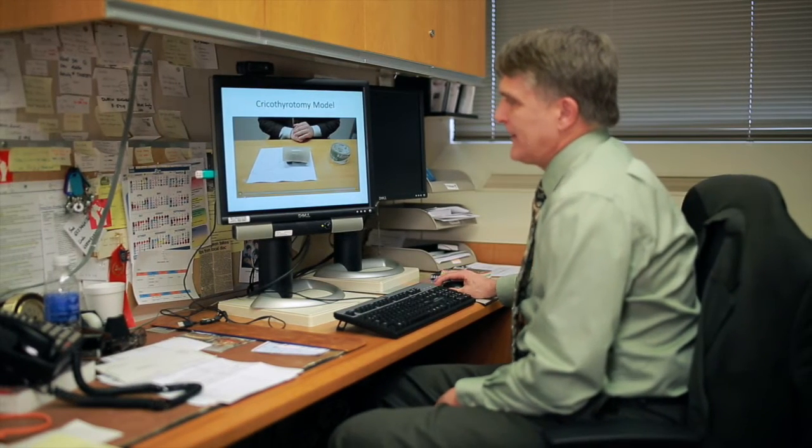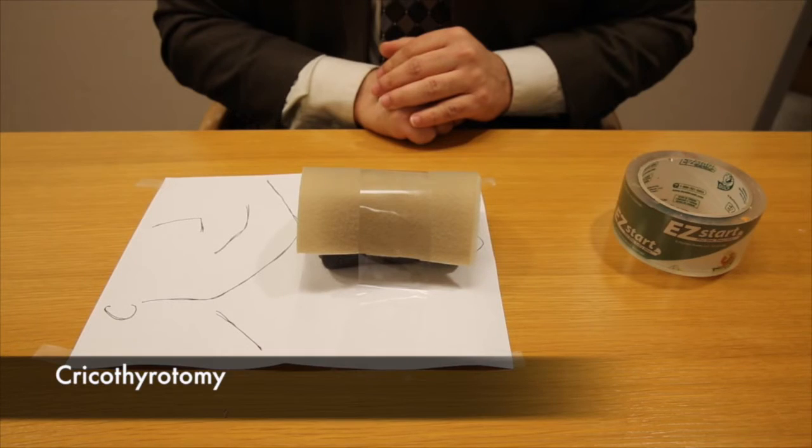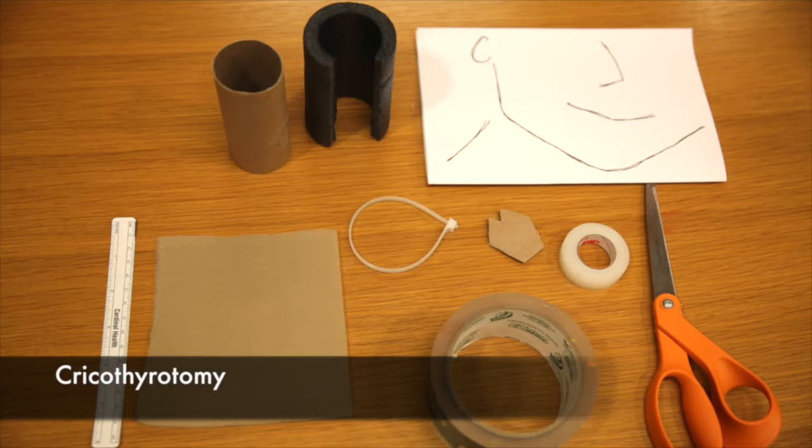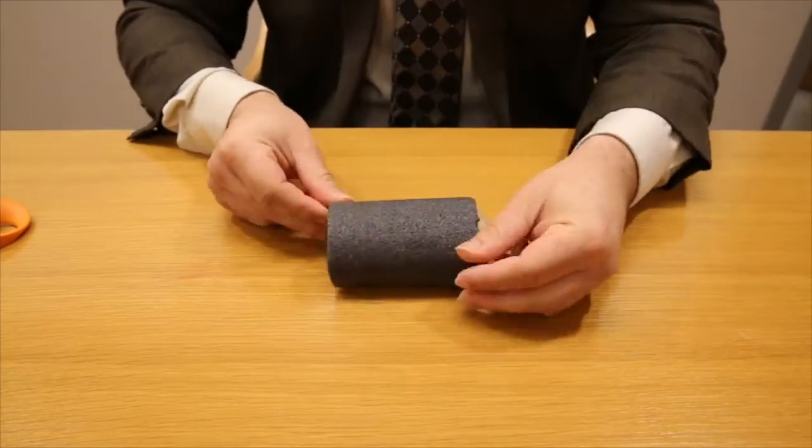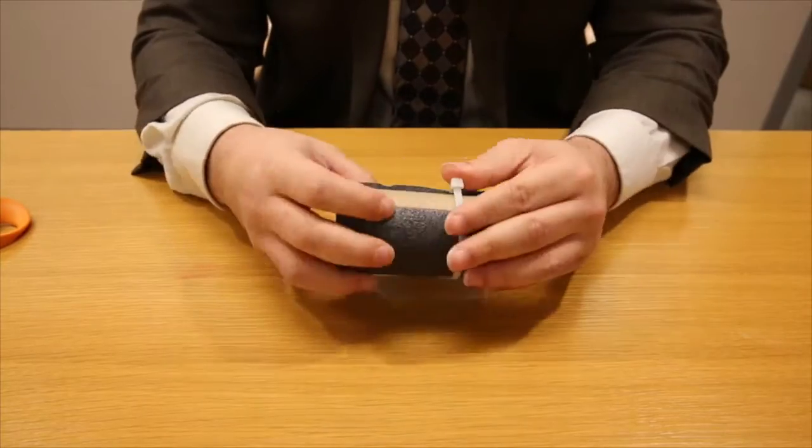This is our cricothyroidotomy model. It's a pretty simple model. It comes with a variety of things that are easily purchased at a fabric store or a hardware store and we put them together.